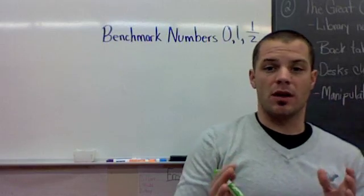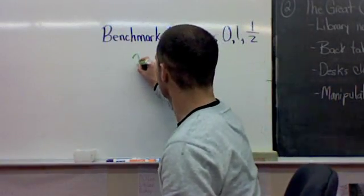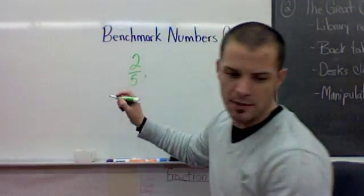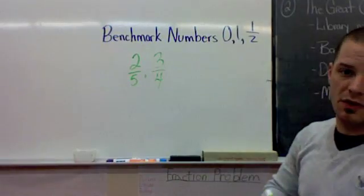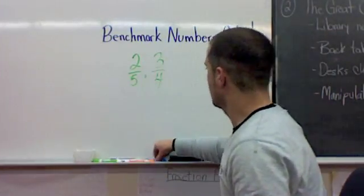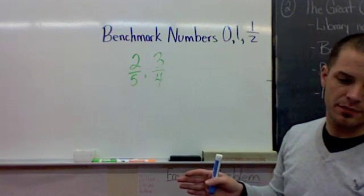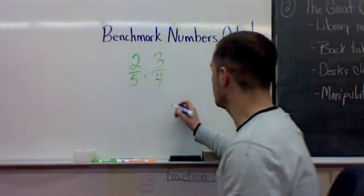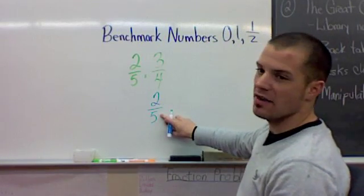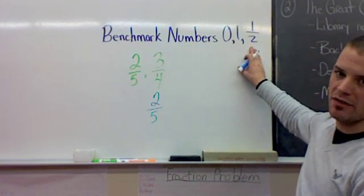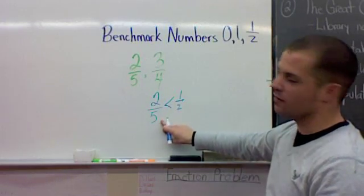And why we call these benchmark numbers is because they are. They're really good benchmarks. So let's say, for example, I was to give you two-fifths and maybe we'll just stick with the one we had before, two-fifths and three-fourths. We could tell by comparing to the benchmark numbers which one is greater. Because if we look, two-fifths, if you have two pieces of five, is that greater than or less than one-half? We know that it's less than one-half. It's less than half of the five.